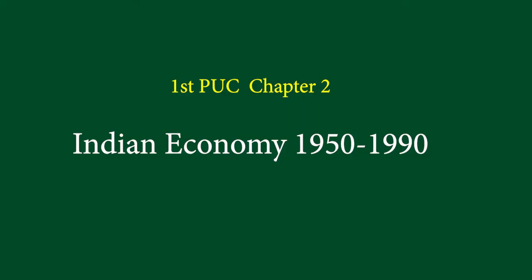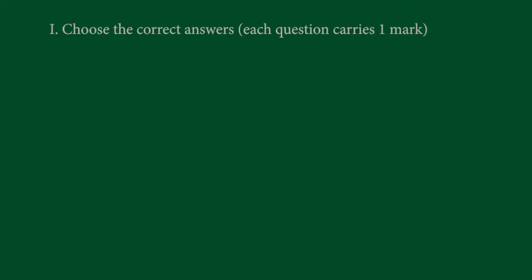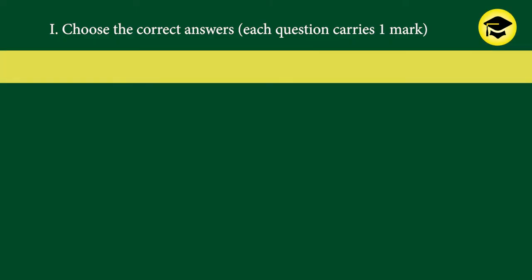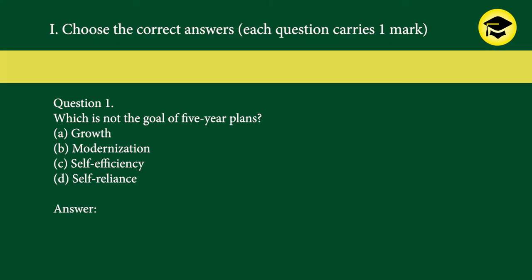First PUC Economics, Chapter 2: Indian Economy 1950 to 1990. Choose the correct answers — each question carries one mark. Question 1: Which is not the goal of five-year plans? A) Growth, B) Modernization, C) Self-sufficiency, D) Self-reliance. Answer: C) Self-sufficiency.